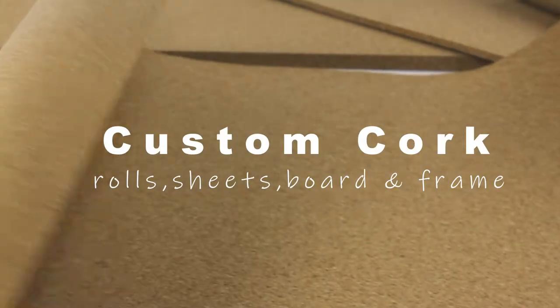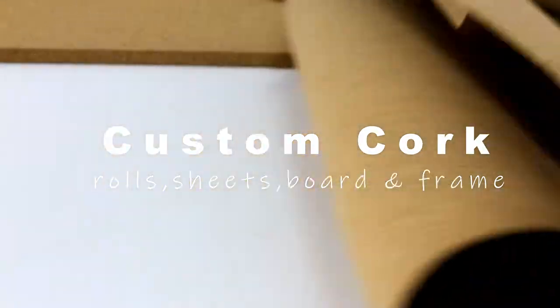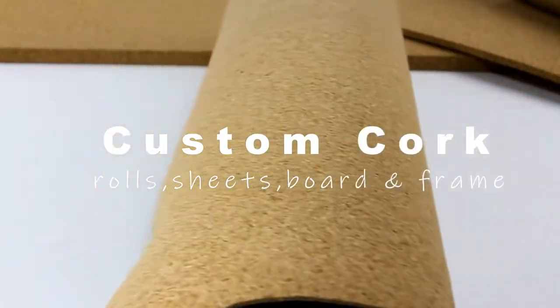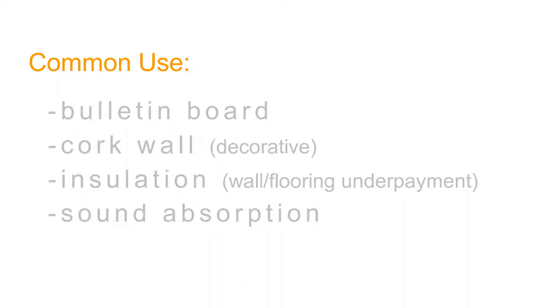These lightweight all-natural corks are ideal for small DIY to large industrial projects. These are commonly used to build custom bulletin boards. Cork rolls can be combined to cover a wall as a decorative element, used as an insulation material for wall and flooring underpayments, and are perfect for sound absorption.